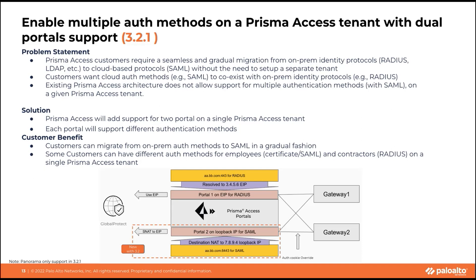With this solution, you can have RADIUS for portal one and SAML for portal two. Users simply select a different portal in their GlobalProtect agent to migrate from one authentication method to the other. Requirements include enabling auth cookie override, and this is currently only supported on Panorama — cloud management support is coming shortly. The two portals are differentiated by port number. All details are publicly documented on the tech docs website.